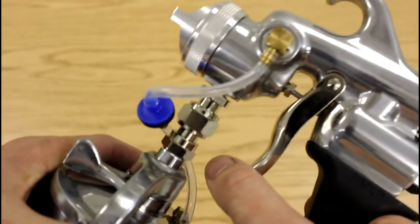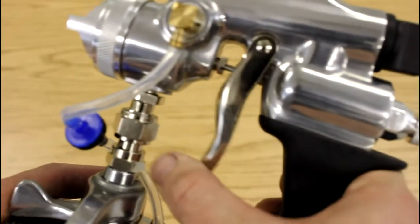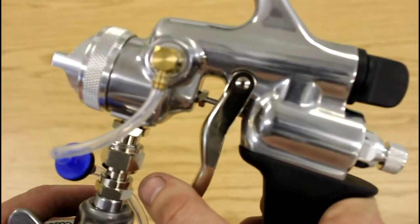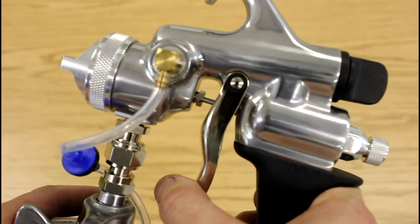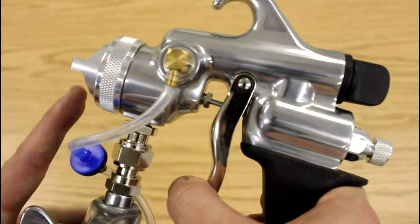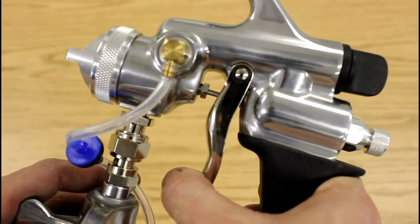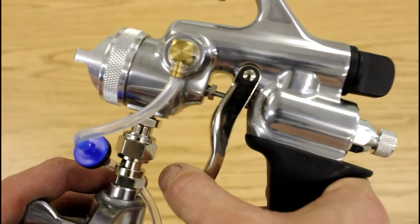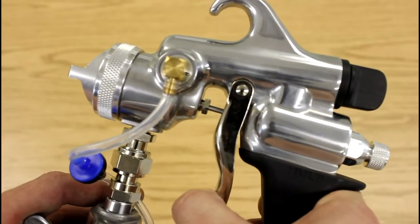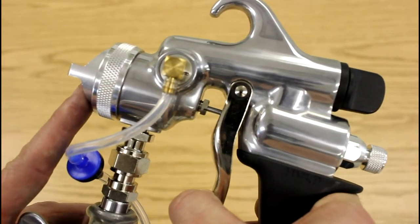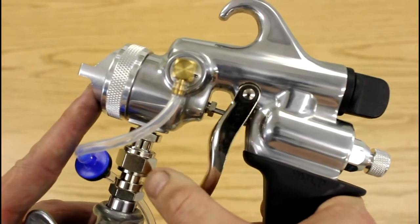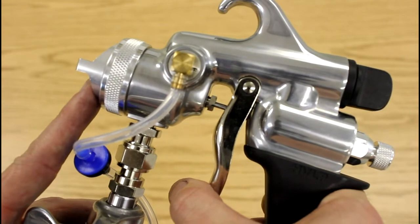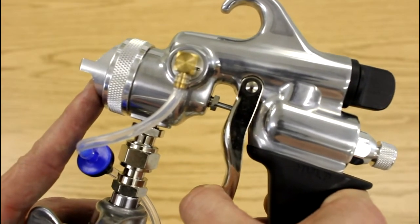Moving on here to the trigger. This is a two stage trigger so how this works is gently pulling back just a little bit will only allow air to come out so you can kind of pull back and maybe blow off any dust or debris that might be on your project and then pulling it back the rest of the way will release the material along with it. So the first stage is just air, second is material.